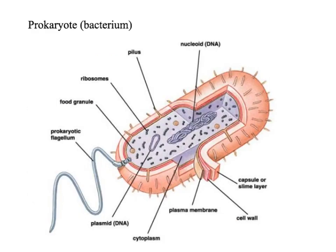This is a prokaryotic cell. There are no membrane-bound organelles inside the bacterium in this case. They've got a slightly different structure. Instead of their DNA being found inside a nucleus, they've got a loop of DNA, sometimes called a nucleoid. They've also got plasmids, which is just a little circle of DNA. They do have ribosomes, but they are smaller than those found in eukaryotic cells.